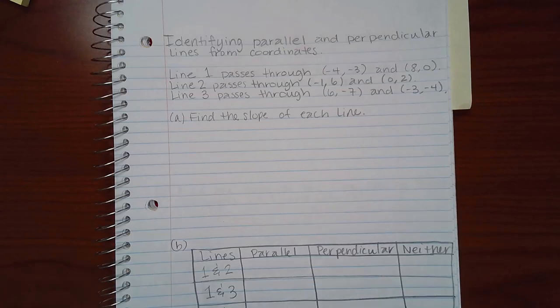This video is about identifying parallel and perpendicular lines from coordinates. We've got three lines and each line passes through a set of coordinates. So the first thing we need to do in order to tell whether they are parallel, perpendicular, or neither, is to find the slope of each line.